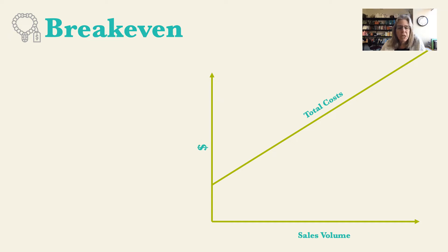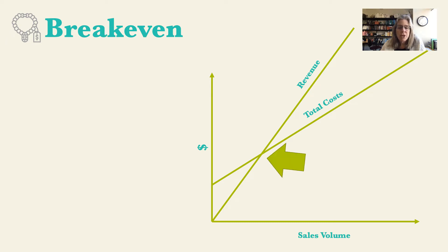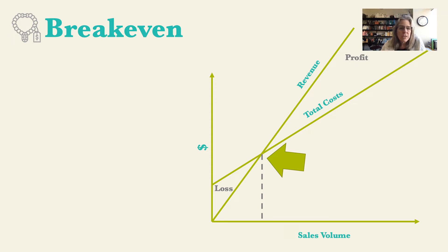Instead of costs, I'm going to change that to dollars and add a revenue function. If we think about profit, we know that profit equals revenue minus costs. When sales volume is above the intersection point, revenue is greater than costs. When it's below that, costs are greater than revenue. That intersection is what we call the break-even point — the volume at which we begin to make a profit. Below that, we have losses.